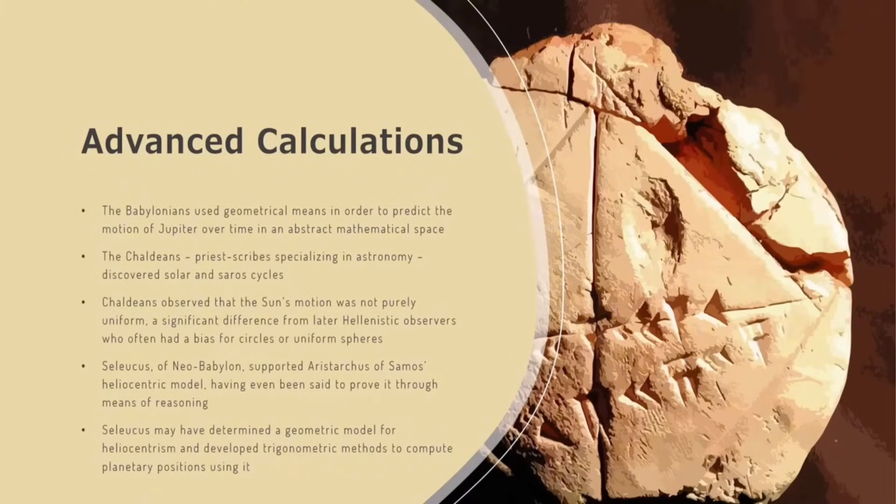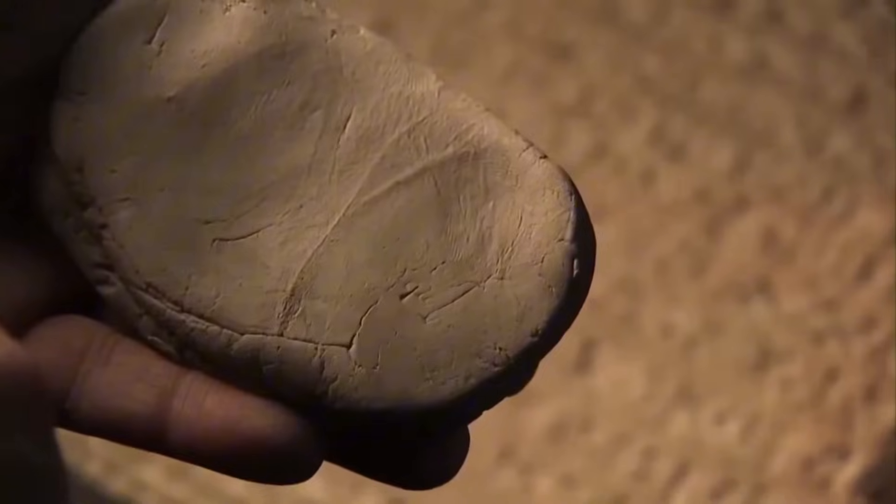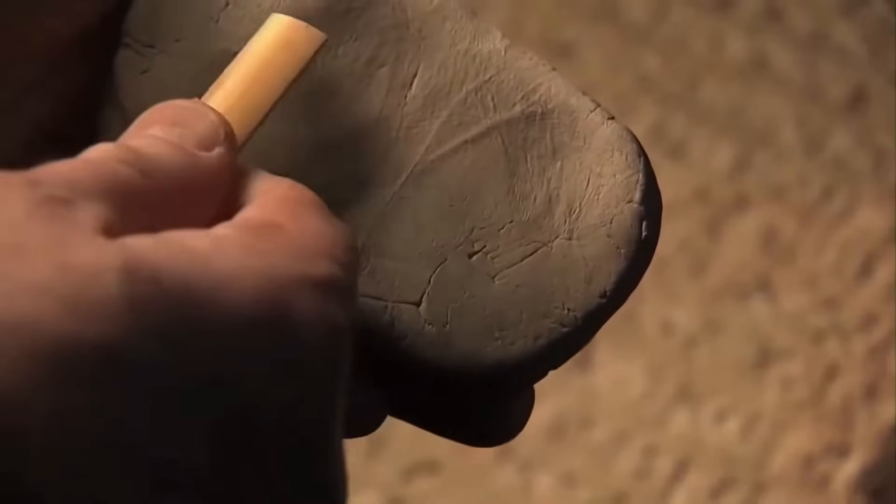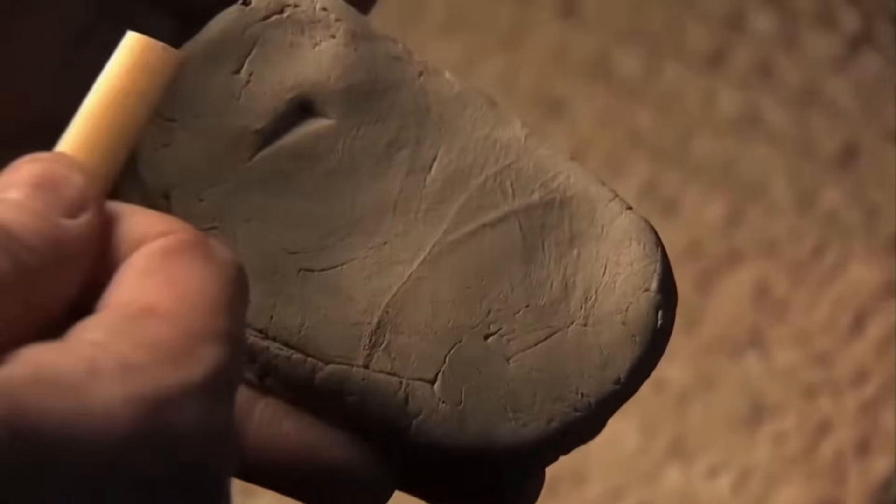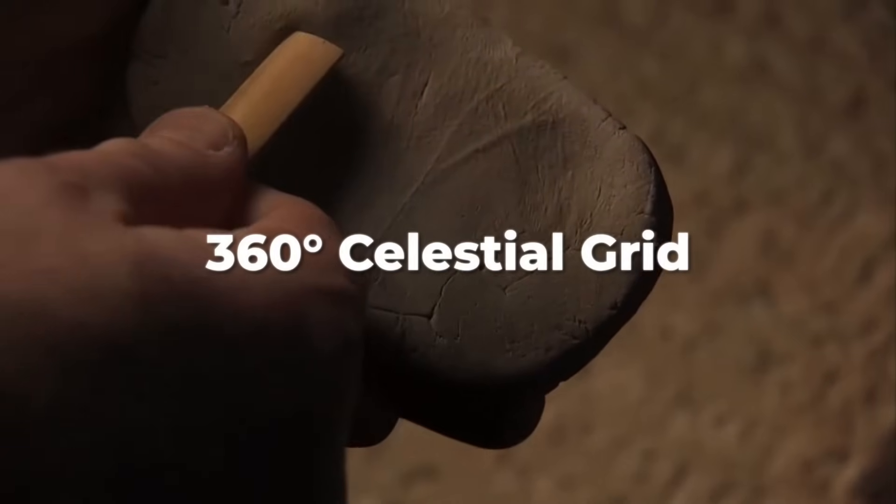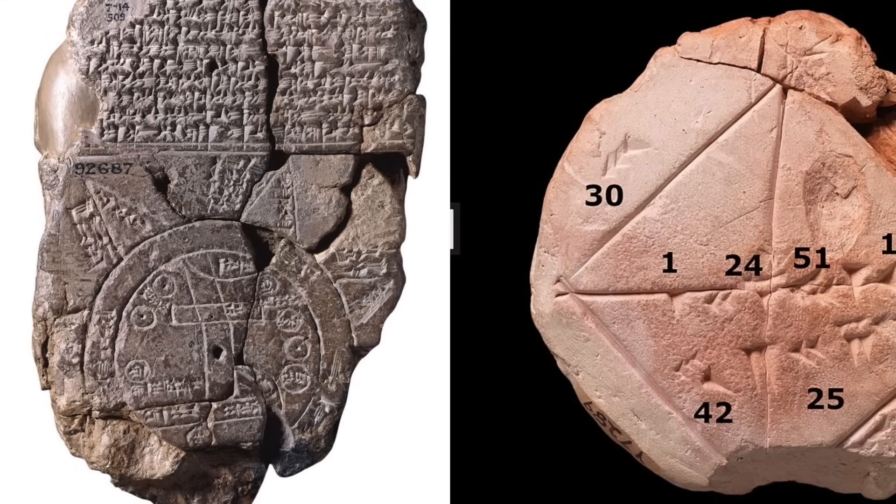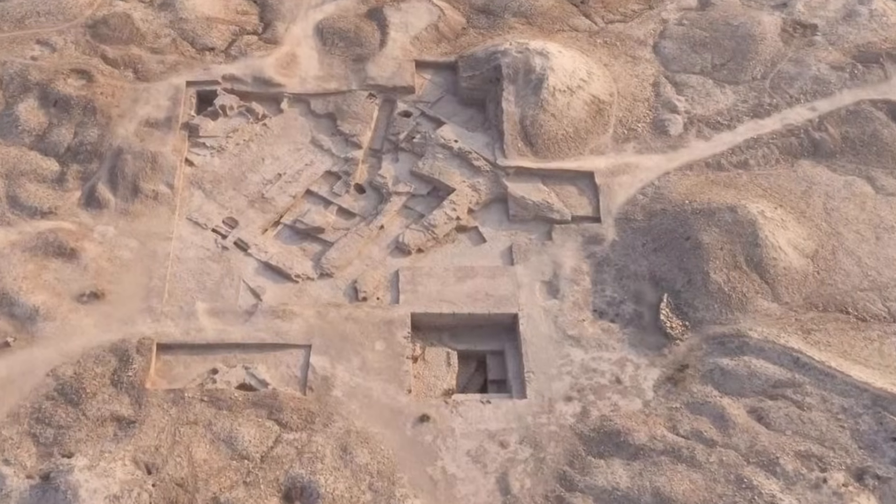Their tablets, some still readable today, are filled with lists of star positions, lunar cycles, and predictions of eclipses, all written in numbers that fit perfectly into this system. The 360-degree circle made it possible to turn messy, unpredictable sky events into something you could write down, calculate, and even predict.